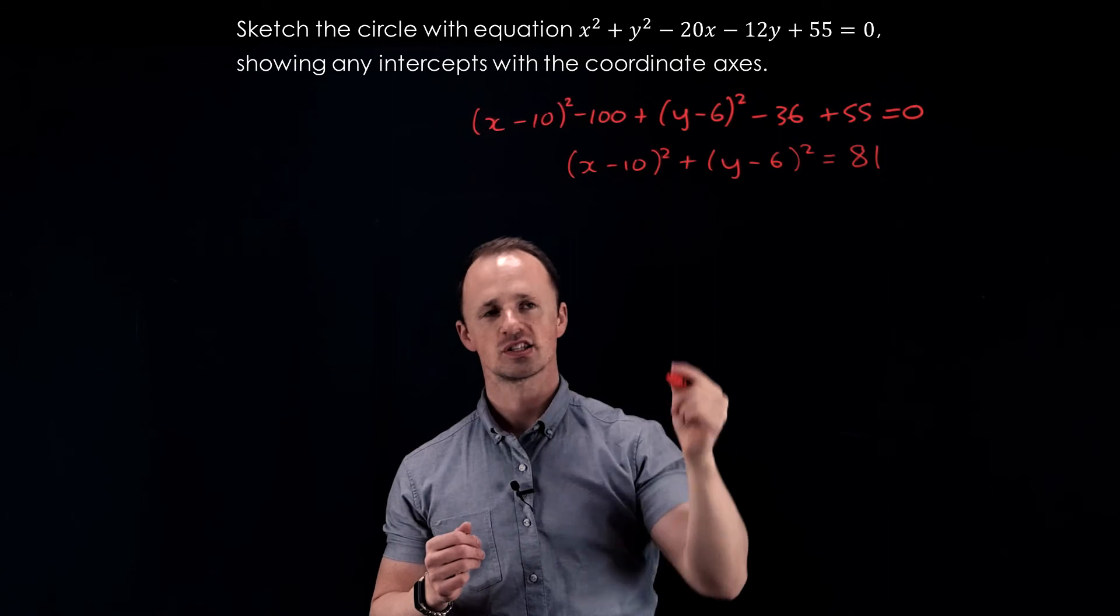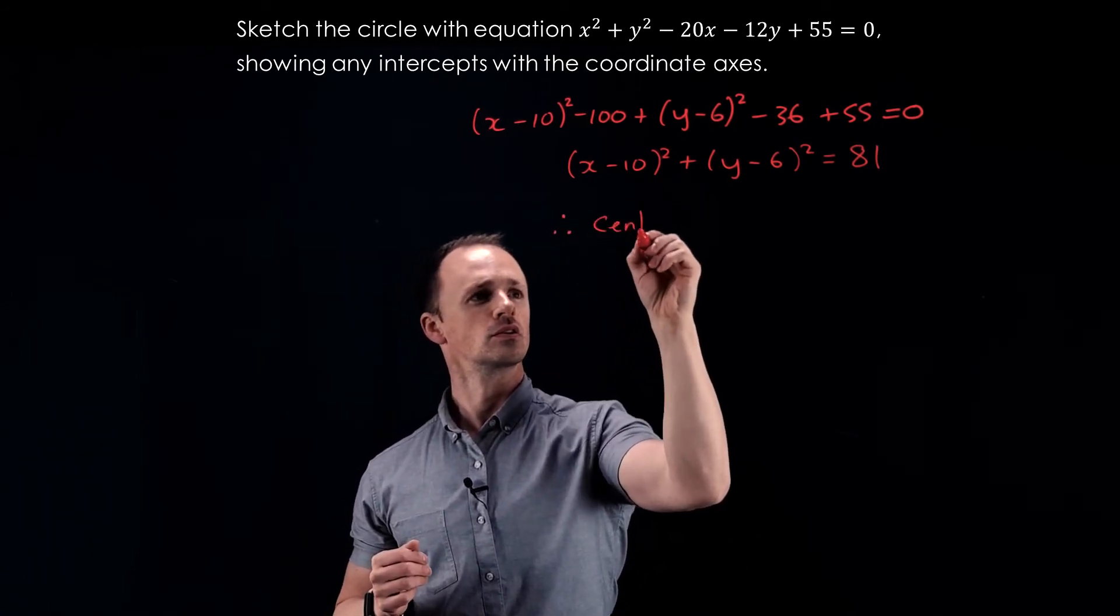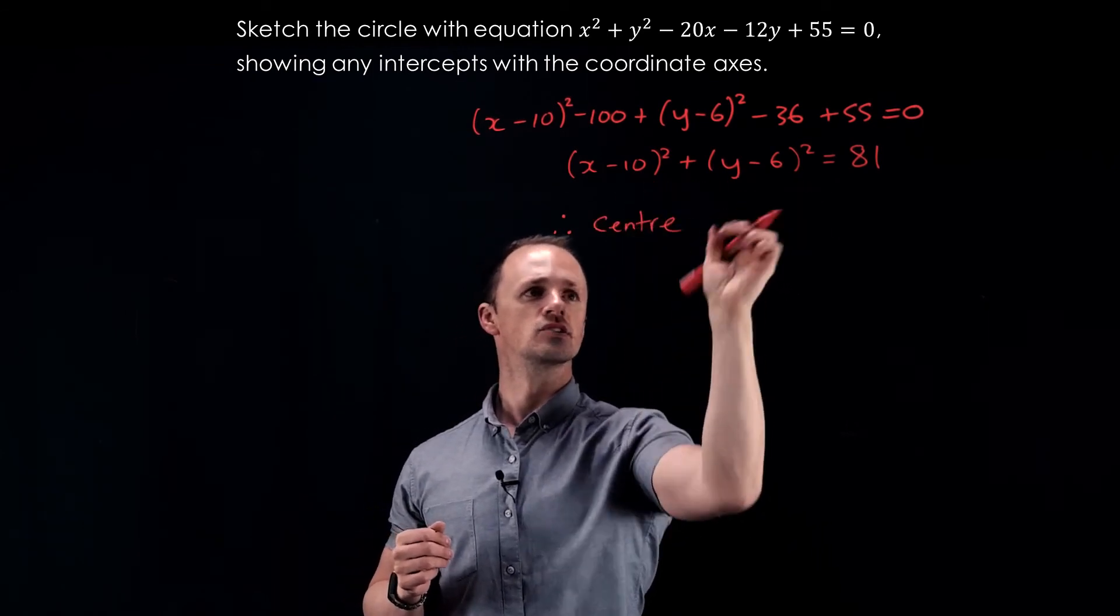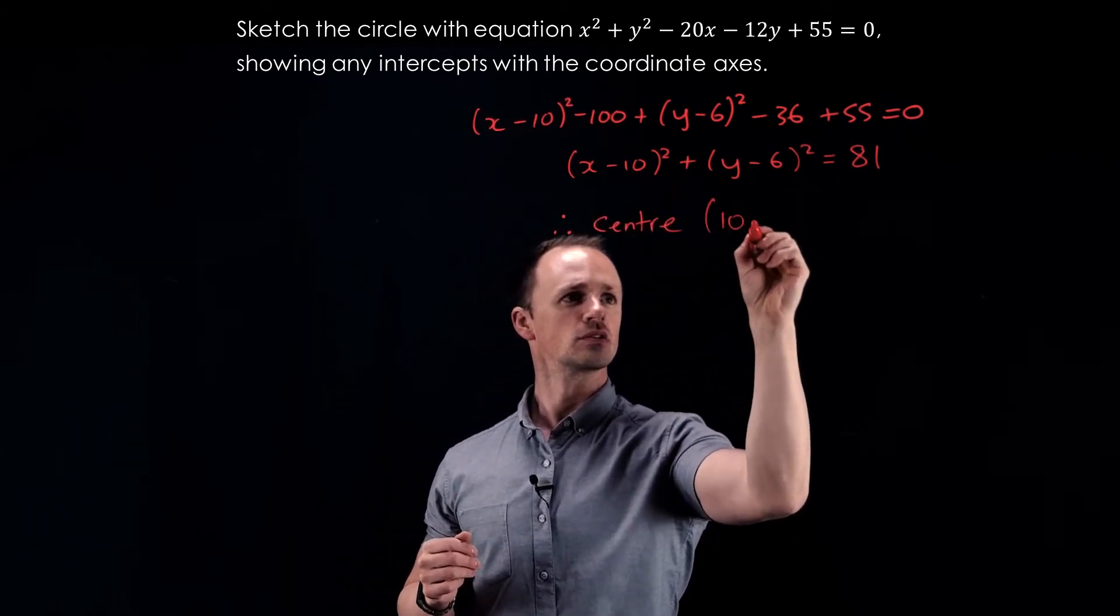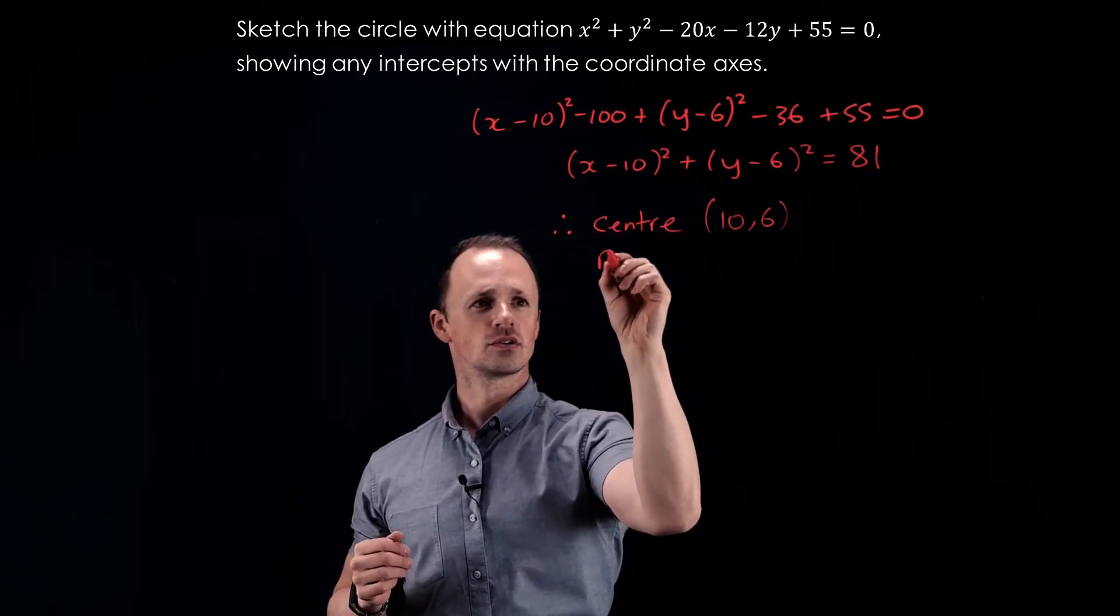That gives us the center and radius of our circle. The center is going to be 10, 6, and the radius is the square root of 81, which is 9.